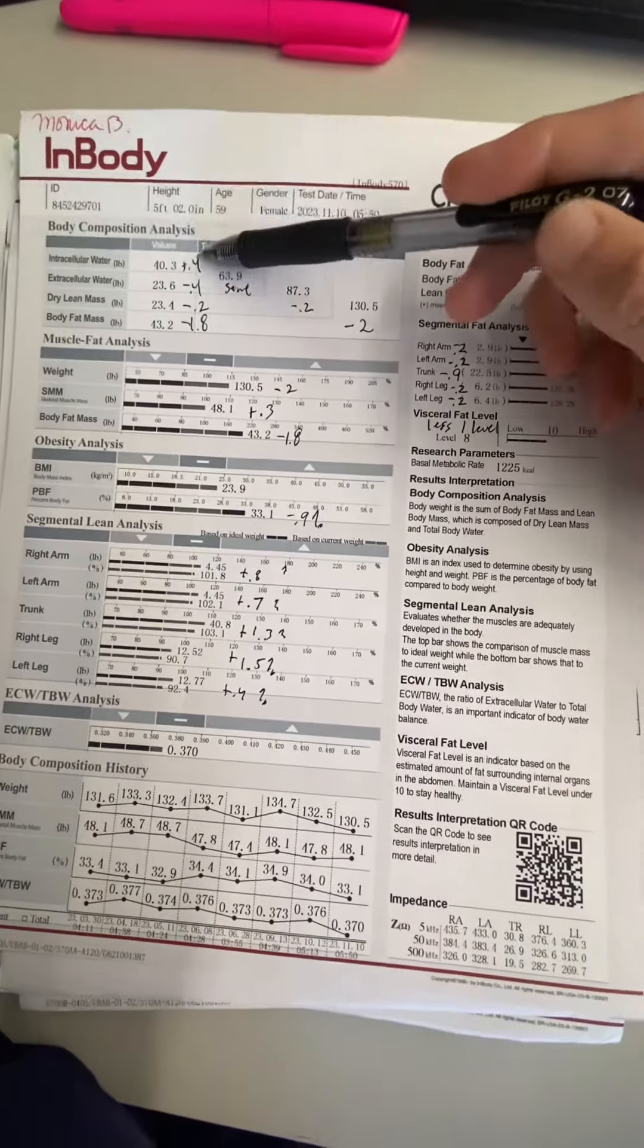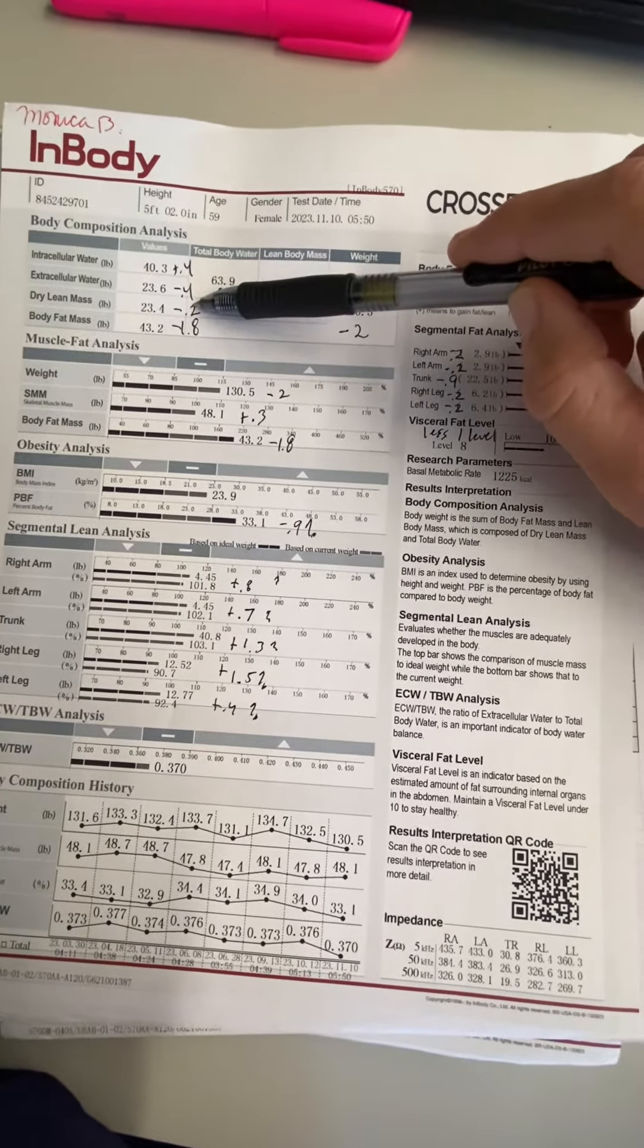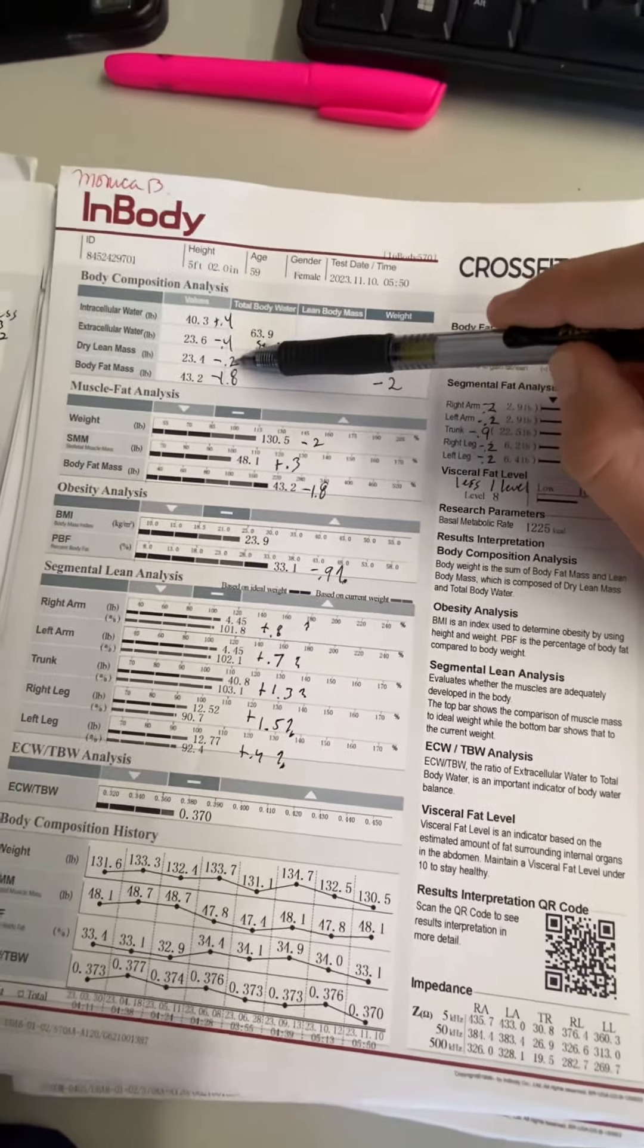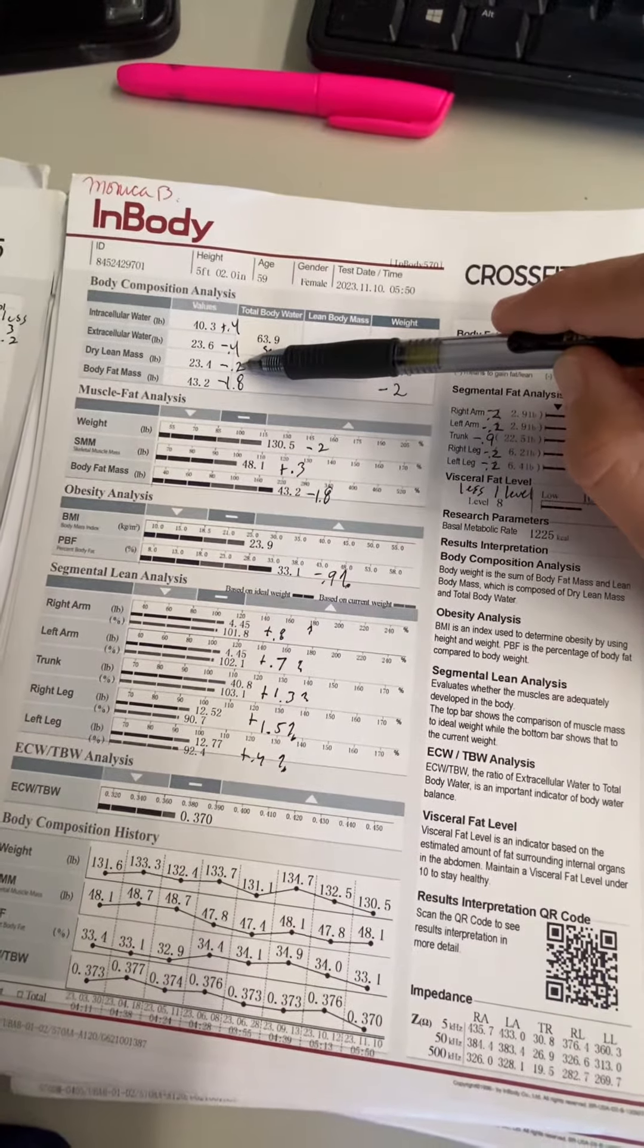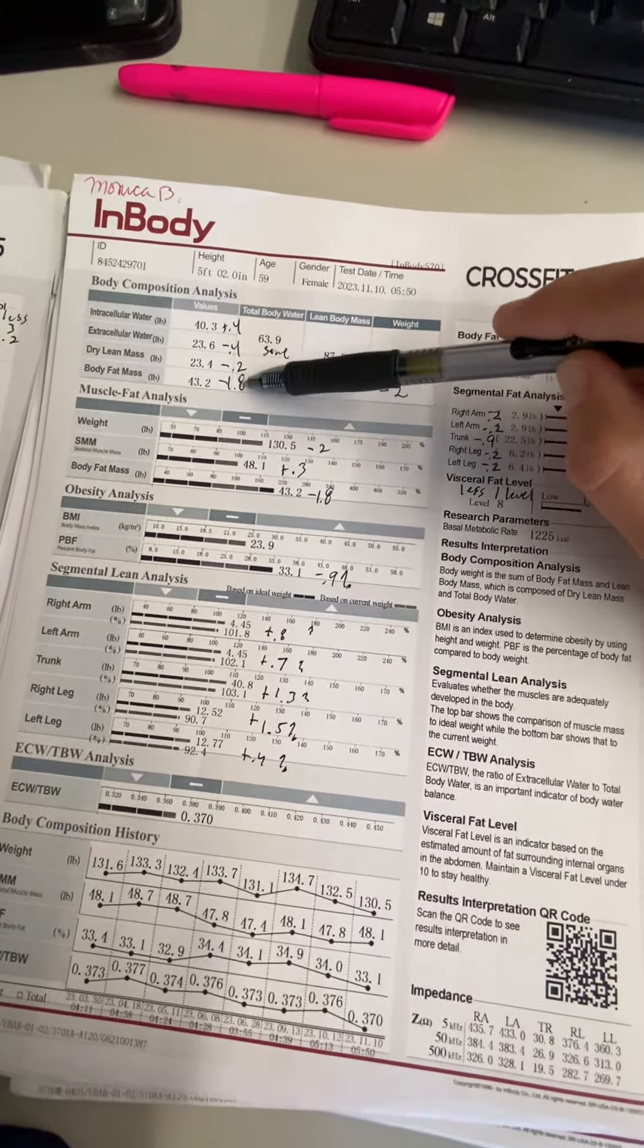But anyway, let's go over the numbers. So your water stayed the same and you did lose 0.2 pounds of dry lean mass, which is super insignificant - I'm not really going to worry about that. And you lost 1.8, almost two pounds of body fat since your last scan, which is great.